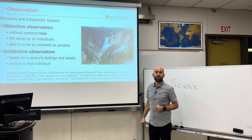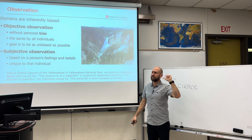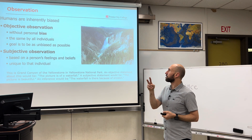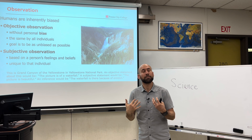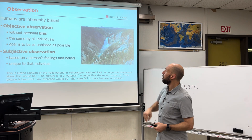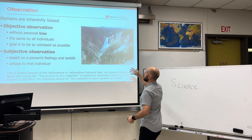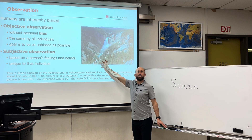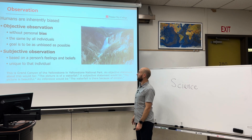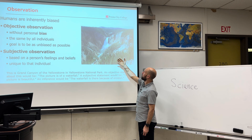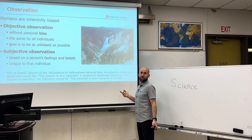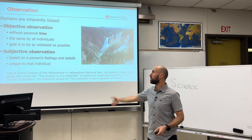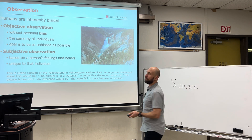Humans are biased — it's true. We have our own lens. There's objective and subjective: my personal feelings and beliefs are subjective, while without bias is objective. For example, the Grand Canyon of the Yellowstone here in Yellowstone National Park — subjective is saying this is a beautiful landscape because I think it is. Objective is saying the image shows a waterfall. There's no feeling in that. It is a technical description of water in free fall, part of a river. Science is trying to reach these objective observations, not saying 'it's so pretty because I like it.'